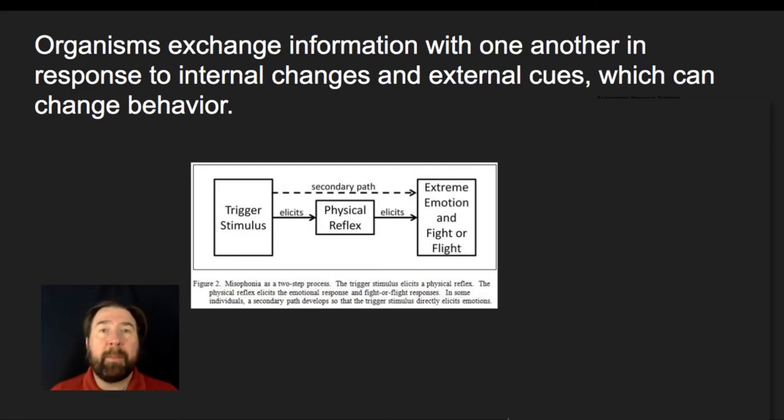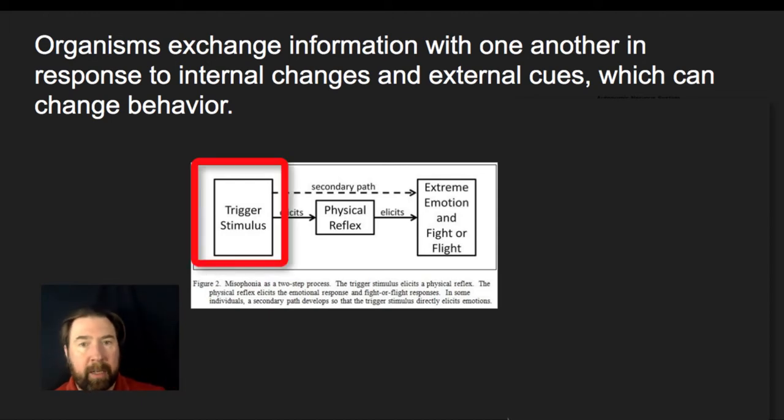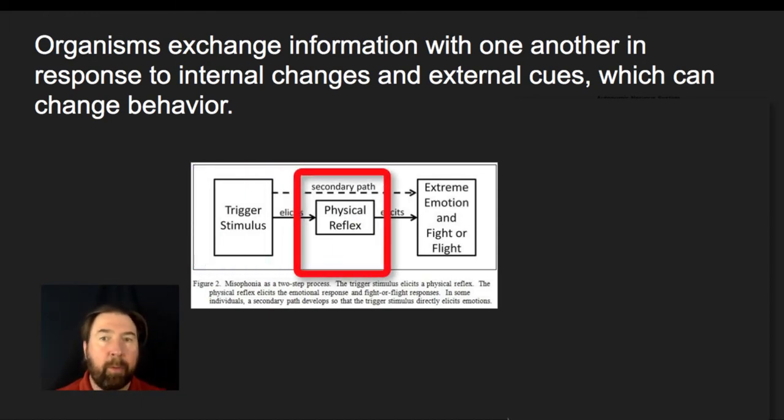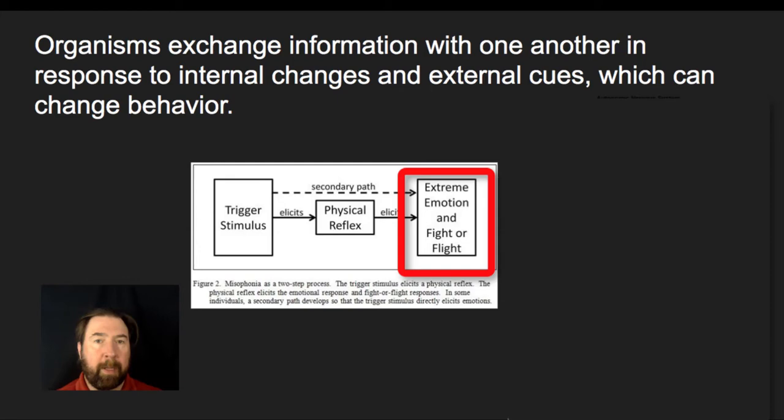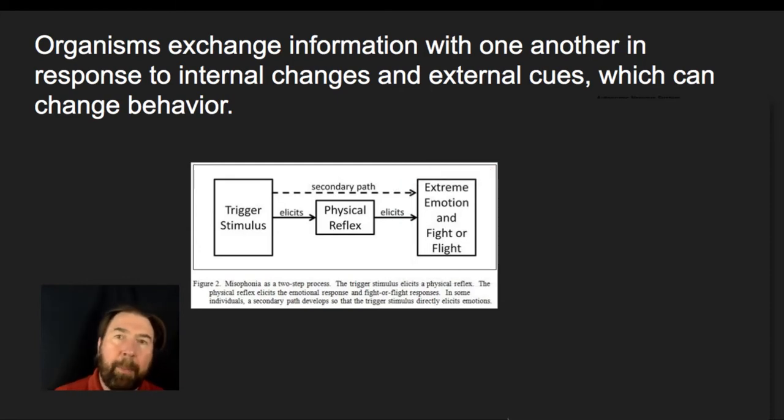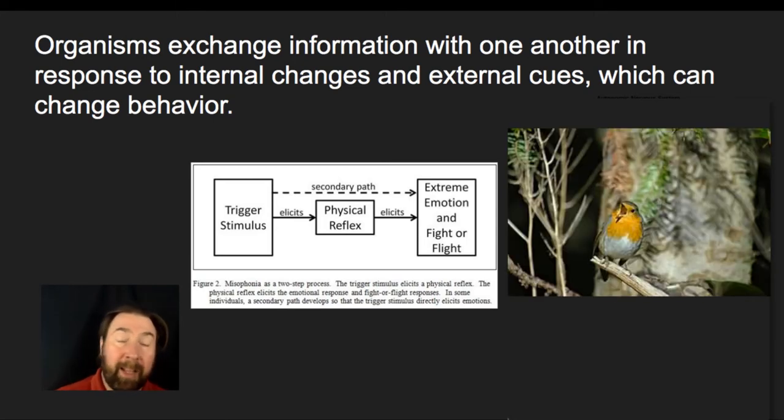Organisms exchange information with one another in response to internal changes and external cues, which change behavior. We notice that not only can we get a trigger stimulus that leads to some sort of physical reflex and response individually, but within a population, you will hear something like a bird that will start singing a message out that will be sending signals to other birds. This could be something like a warning signal, where it's warning other individuals.